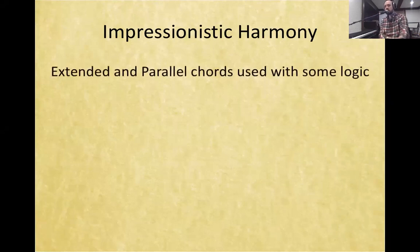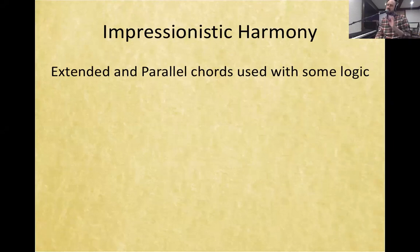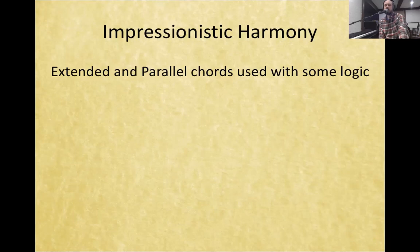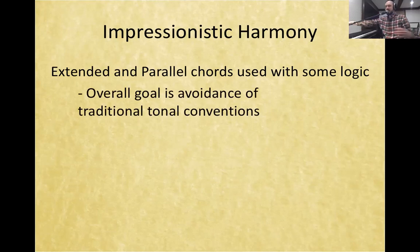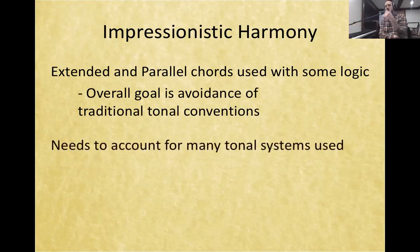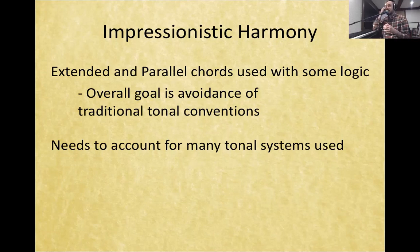We've talked about extended and parallel chords, but when we looked at them we were just sort of saying they exist. We saw in the Bartok example that they were there to dress up the mode a little bit — the mode Bartok was using, which was Aeolian — just to bring it out of that strictly folk, older style. We want to dive deeper and investigate the ways that in impressionism we're really trying to avoid conventions associated with traditional tonal music, because we need an approach that accommodates the many different tonal systems used. This is one of the first identifying elements of impressionism: we should expect to find many, many different tonal systems in a piece.